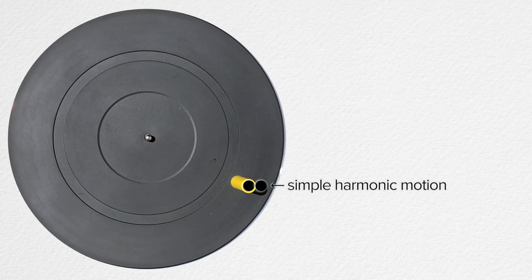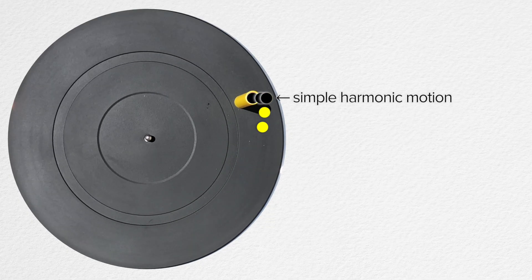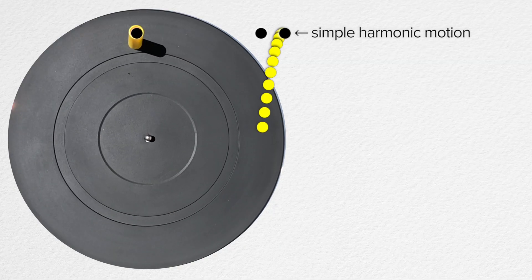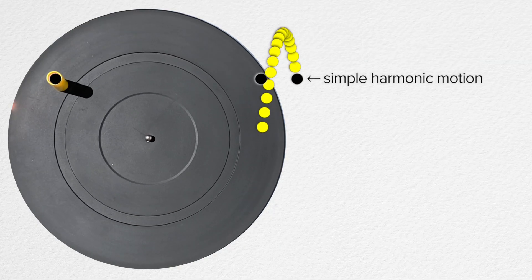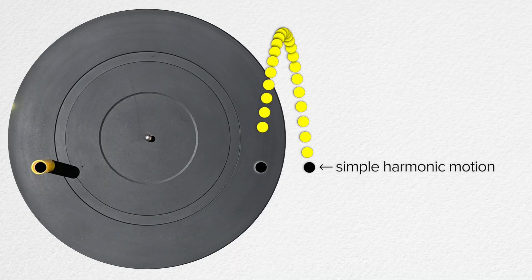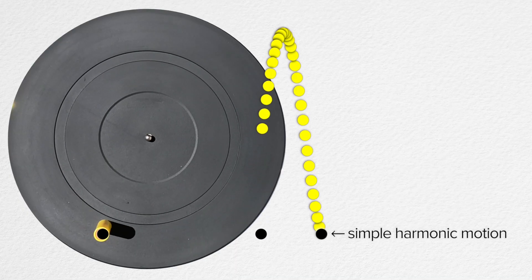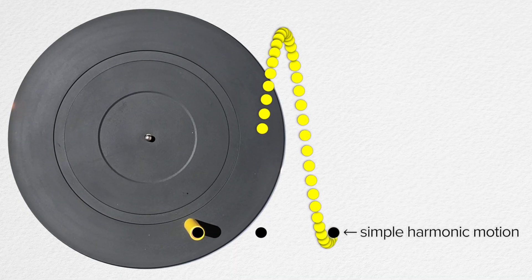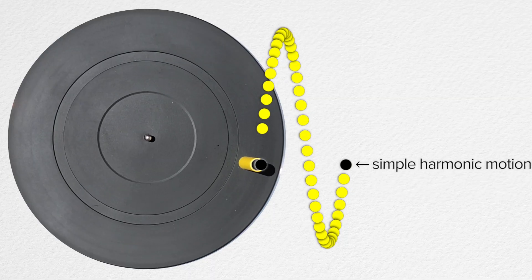And watch the path it creates if we look at where the dot is located as a function of time. Does anybody recognize the shape of that curve? Oh, that is a sine curve. Actually, I think it's a cosine curve. Actually, it could be either one.